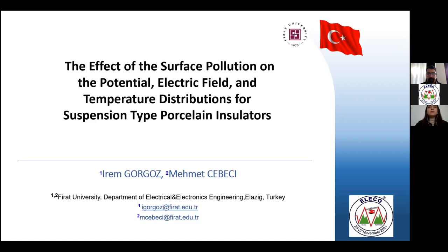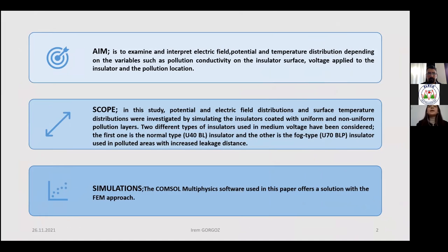The aim of this study was to examine the electric field potential and temperature distributions of insulators in uniform and non-uniform pollution conditions. In this study, normal and fog-type insulators used in polluted areas with increased leakage distance have been considered. The examinations were made in the COMSOL Multiphysics program, which is based on the finite element method approach.